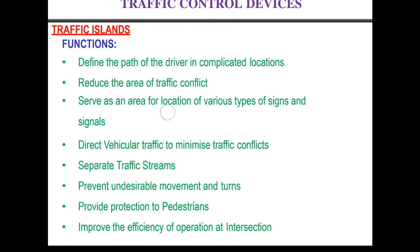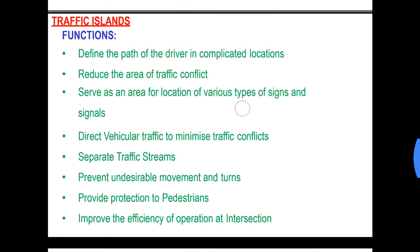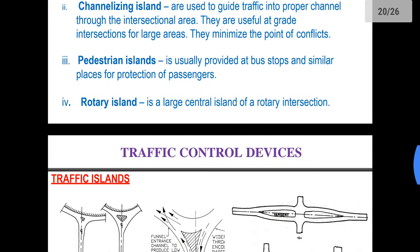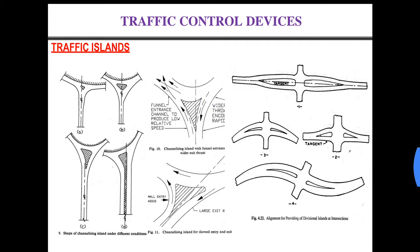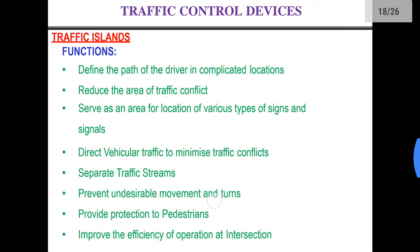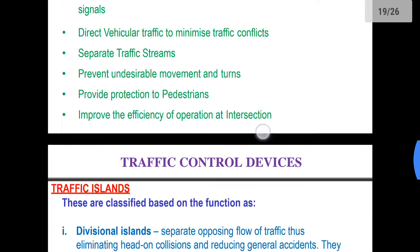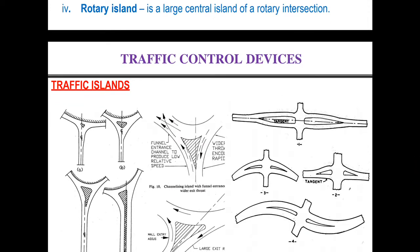Traffic islands serve as an area for location of various types of signs and signals. So various types of signs and signals can be placed on these traffic islands. They also direct vehicular traffic to minimize traffic conflicts and to channelize the traffic.